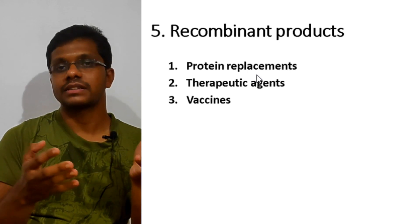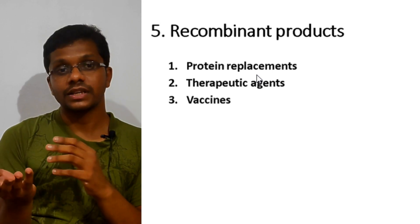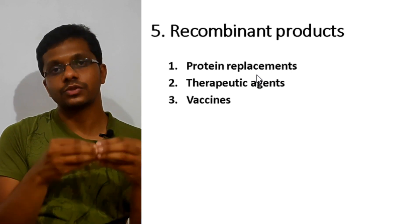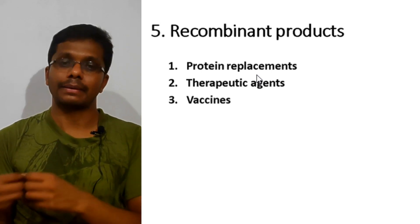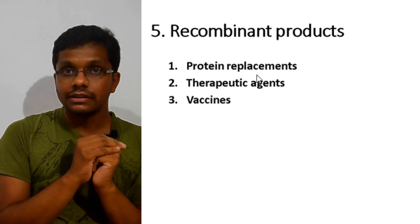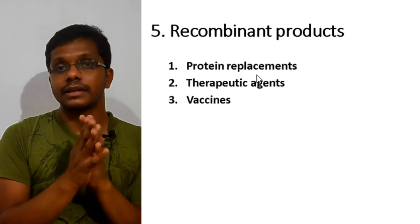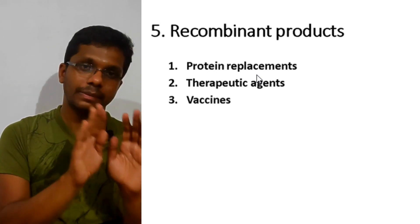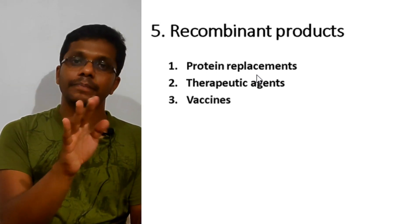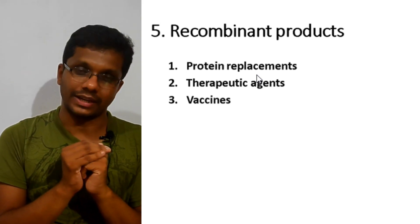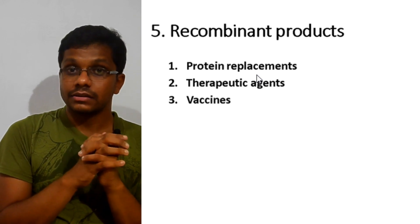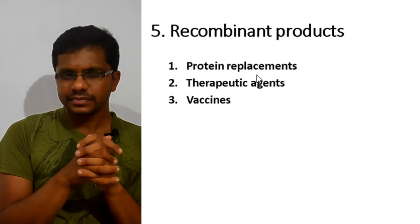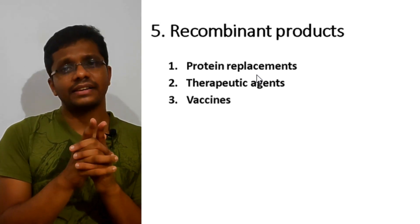The first use is protein replacement therapy. For example, type 1 diabetes patients cannot produce insulin, so bacteria are made to produce insulin to replace it in diabetic patients. Similarly, clotting factor VIII, which is absent in haemophilia patients, can be produced recombinantly and given to the patient. The second use is as therapeutic agents — interferons produced using recombinant DNA technology are used for the treatment of cancer and as antiviral agents. Tissue plasminogen activator is also a therapeutic agent.